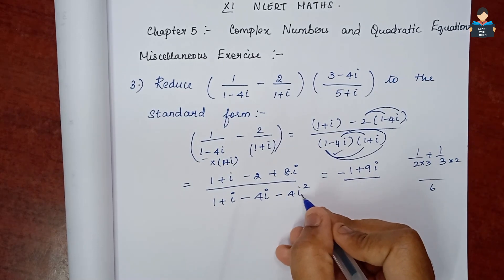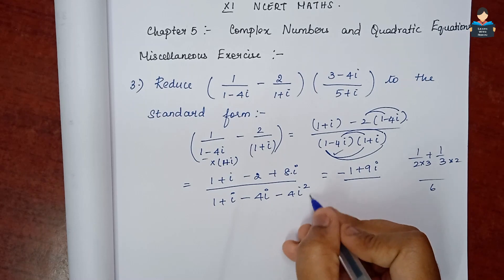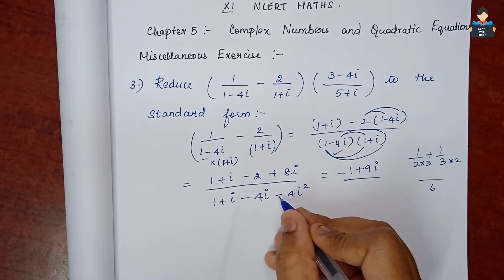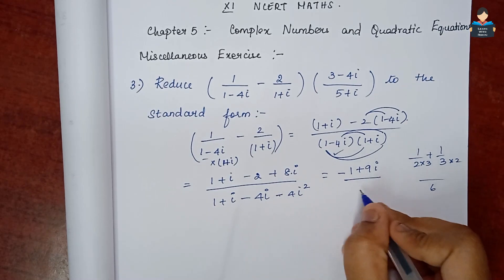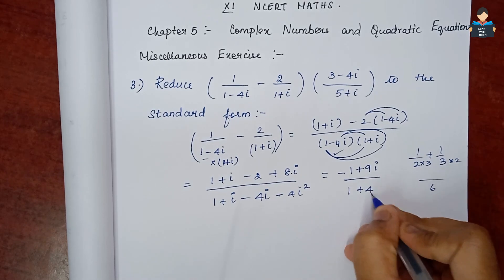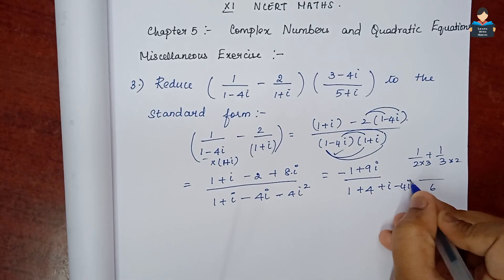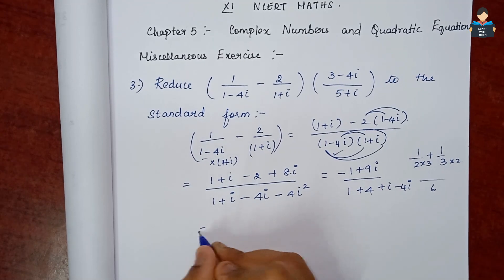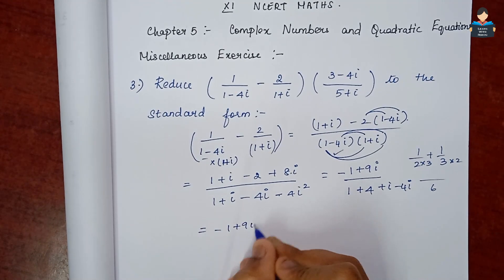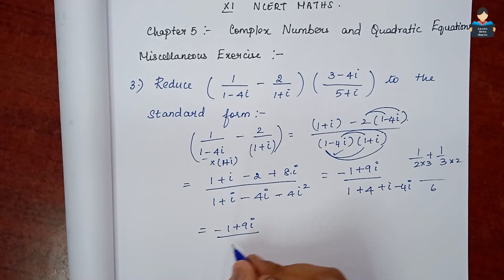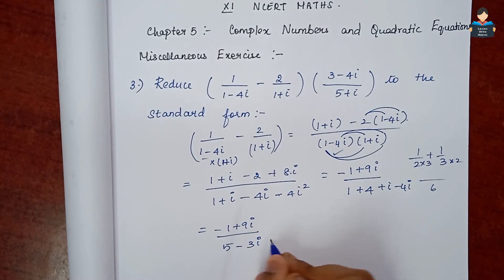Since i² = -1, so 4i² = 4 × (−1) = −4. So 1 + 4 = 5 in the denominator. The numerator becomes −1 + 9i and the denominator is 5 − 3i, giving (−1 + 9i)/(5 − 3i).